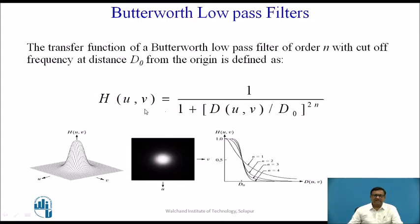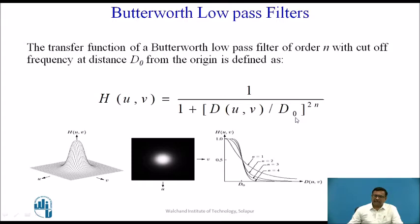The equation of the Butterworth Low Pass Filter is 1 divided by 1 plus D(u,v), where D(u,v) is the distance of a pixel from the center, that is (0,0). D0 is the radius of this circle — changing this radius will affect the performance of the filter. We can also change the value of n, the order of the filter. So we have two parameters: D0 (the radius) and the order of the filter.